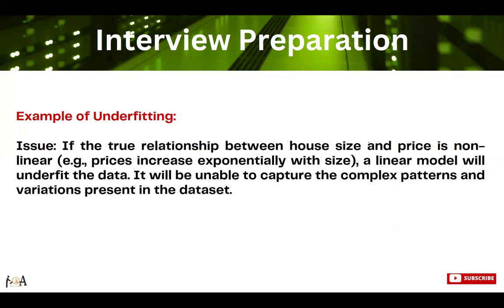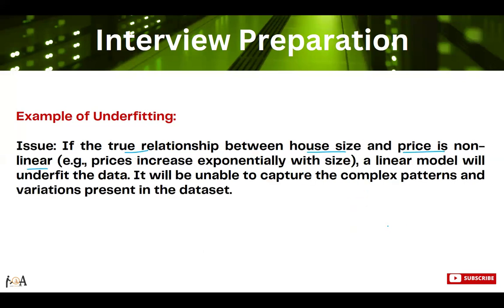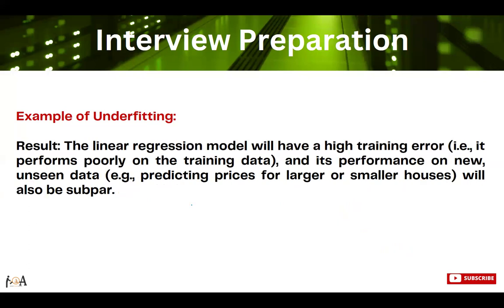The model will try to fit a straight line to the data, so it is not going to cover anything very complex or outside that data line. The issue is that if the true relationship between house size and price is non-linear — meaning there are some data points where the relationship between size and price is non-linear — that kind of data will not be captured well. This model is going to underfit the data and will be unable to capture complex patterns and variations present in the dataset.